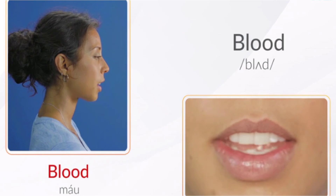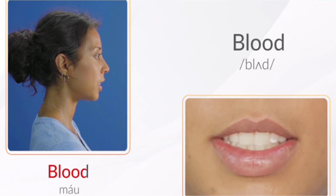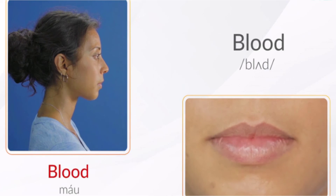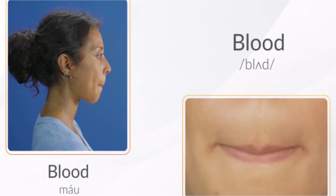Blood. Các bạn lưu ý từ này có chữ nguyên âm A ngắn, chúng ta sẽ đọc là 'Ờ'. Từ này đồng thời cũng sẽ có chữ âm cuối D, chúng ta bật rõ ràng, dứt khoát, dùng cuốn lưỡi để phân biệt với âm T.